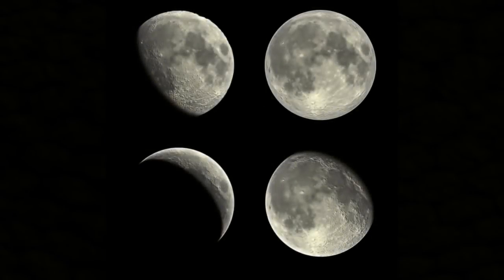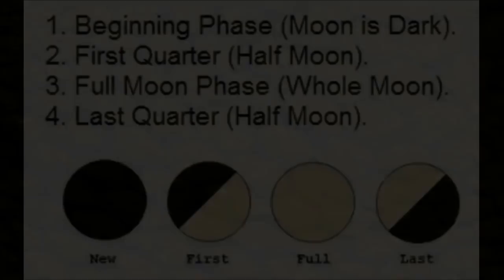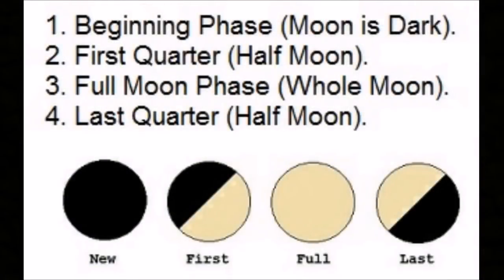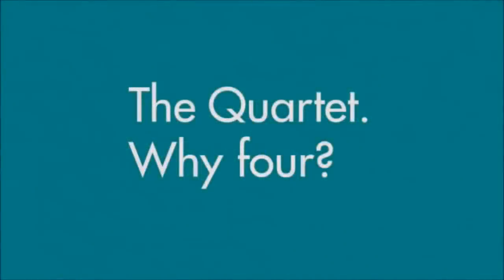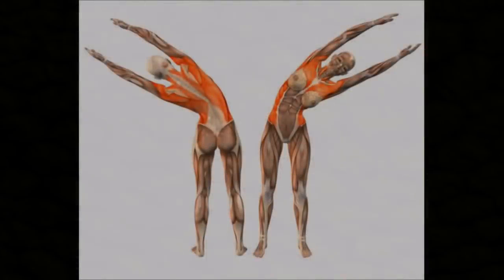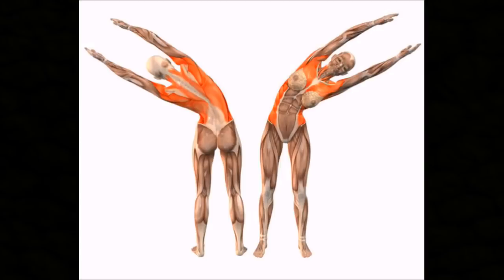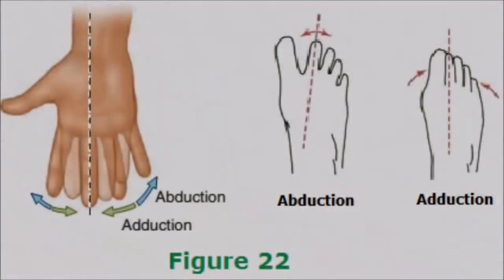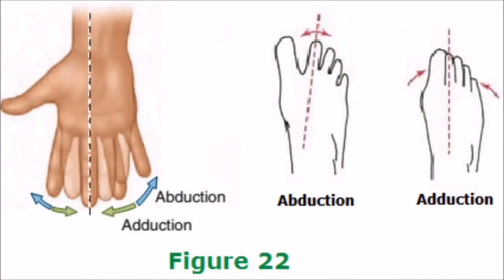How about the fact that our moon has four phases that occur every four weeks? Why four? Coincidence? Maybe. But consider this: human beings have four limbs — two arms and two legs — four fingers and a thumb, four toes and a thumb.